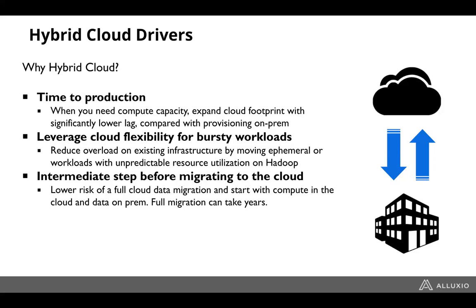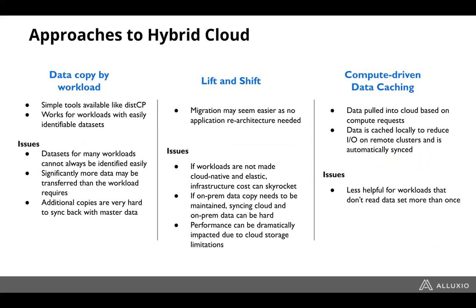Let's look at some of the challenges and approaches to getting to a hybrid cloud. How do I actually run these workloads in the cloud — Spark workloads, Presto, ETL batch conversions, ad hoc queries, data science, machine learning? How do I stitch all of that together while leveraging cloud resources? There are a few approaches: copy the data by workload, do a full lift-and-shift, or leverage caching in the cloud — each with its own benefits and issues.